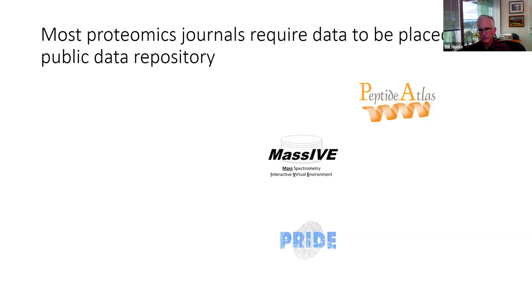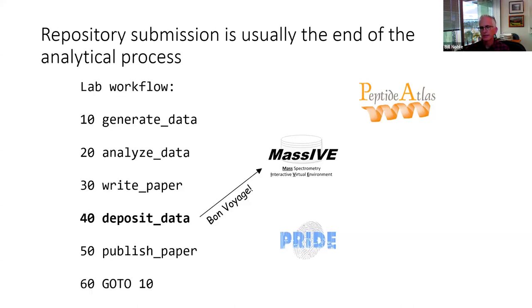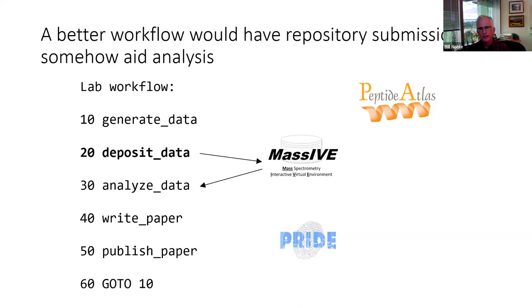The problem we were addressing is that the typical workflow involves data generation, analysis, paper writing, and only then depositing the data because journals require it — after which people forget about it. What we'd like instead is immediate data deposit so that when you analyze data, you can exploit the context of all other experiments already in the repository. The hypothesis is that we can obtain more accurate information about a collection of spectra by using that broader context.